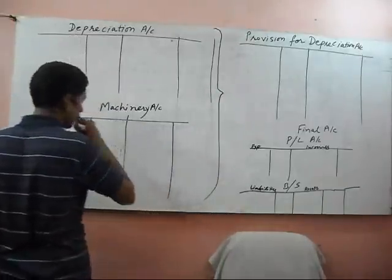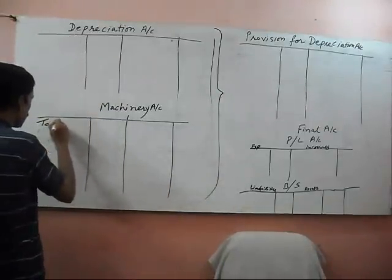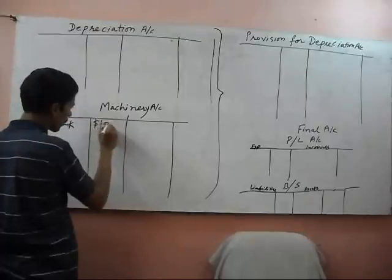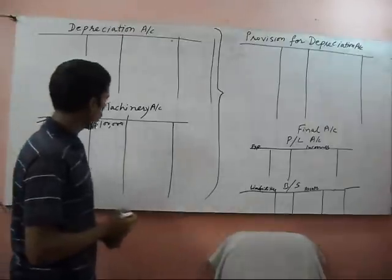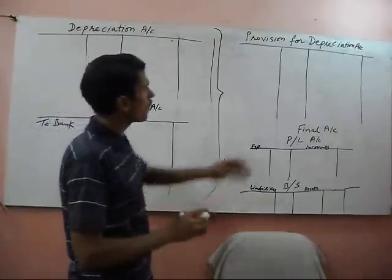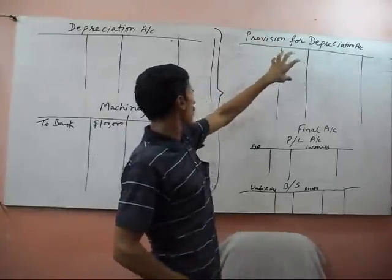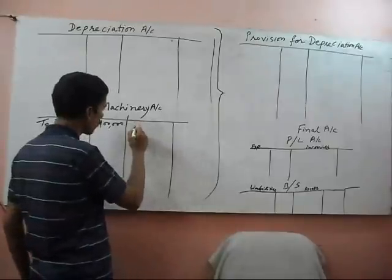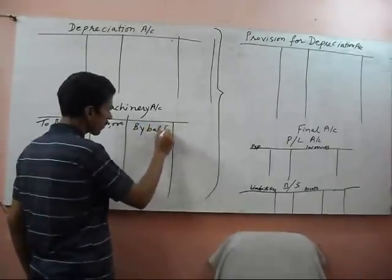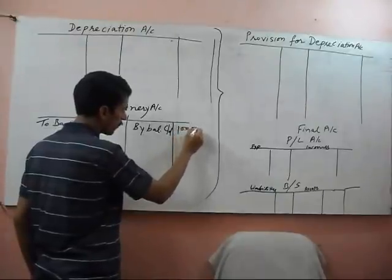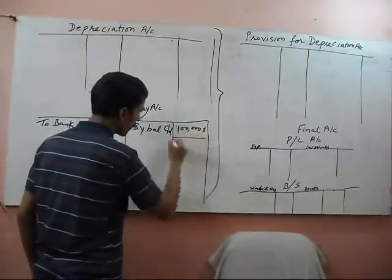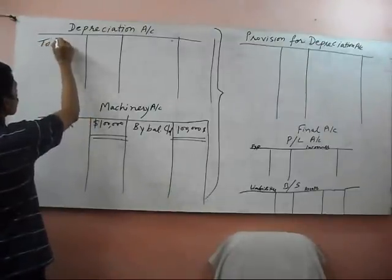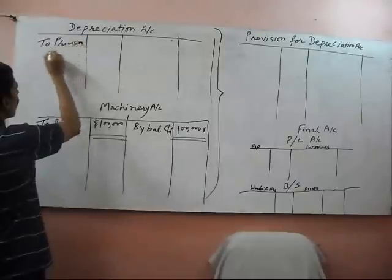For example, we bought a machine with a cheque of one lakh dollar. Now at the end of year, if we make the provision for depreciation account, we transfer nothing to the machinery account or asset account. So we show the balance carried down with one lakh dollar. This is the total balance, and in the depreciation, we show the provision for depreciation account.